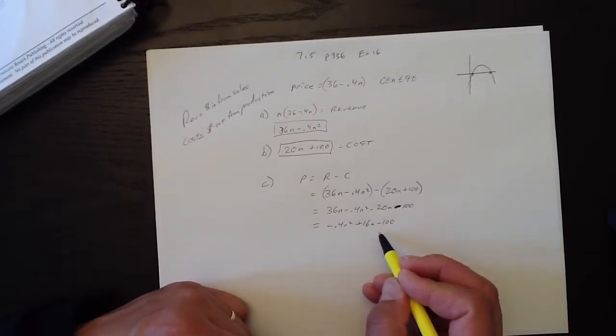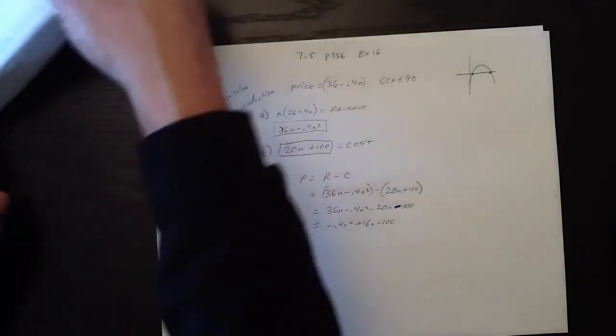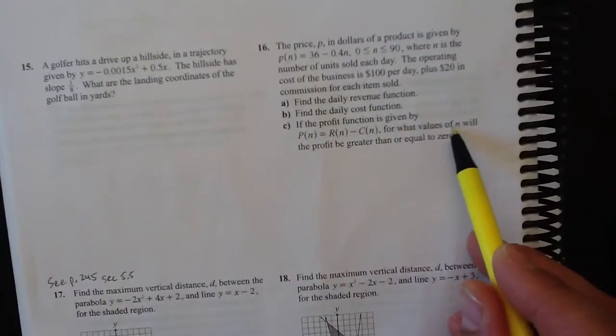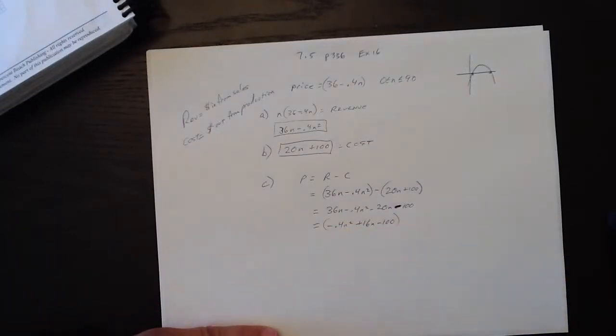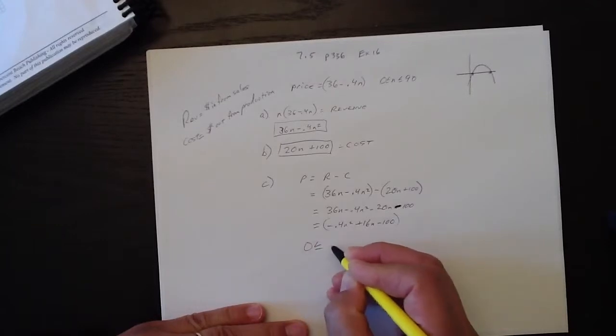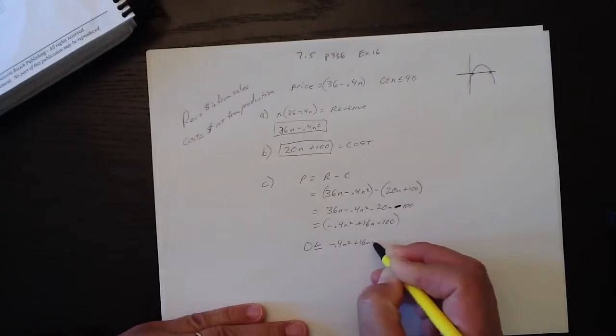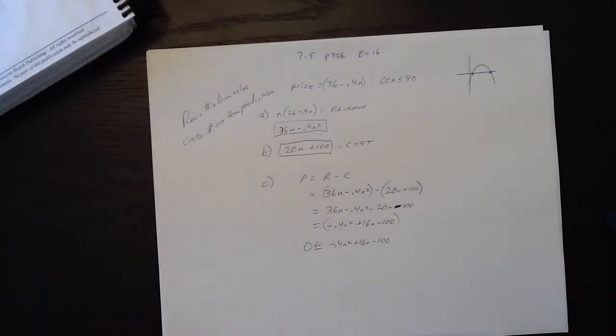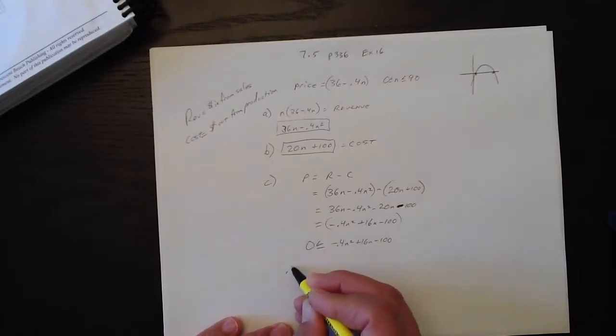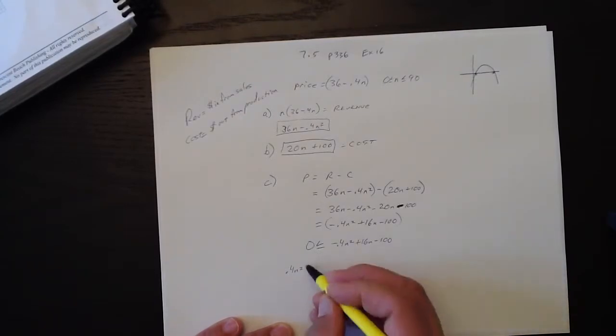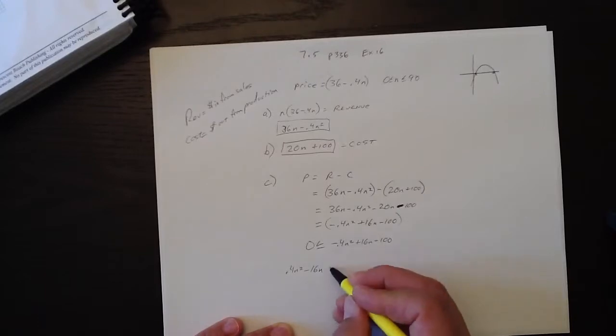We want this stuff to be greater than or equal to zero. Because that's what it asks. For what values of n will the profit be greater than or equal to zero? So, if this is the profit, when will it be greater than or equal to zero? To solve for this, I'm going to move all this stuff over to the left-hand side because I don't like this minus sign here. We'll add 0.4n squared to the left-hand side, subtract 16n from both sides, add 100 to both sides, and there's zero left over on the right-hand side.